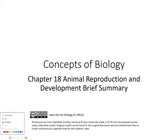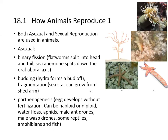We'll do a very brief summary of chapter 18 because I'm not sure if we're going to have time to go over this stuff. Chapter 18: Animal Reproduction and Development. How do animals reproduce?